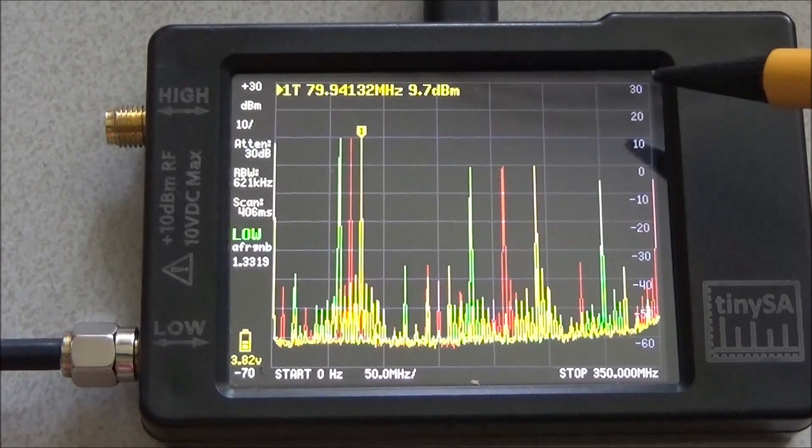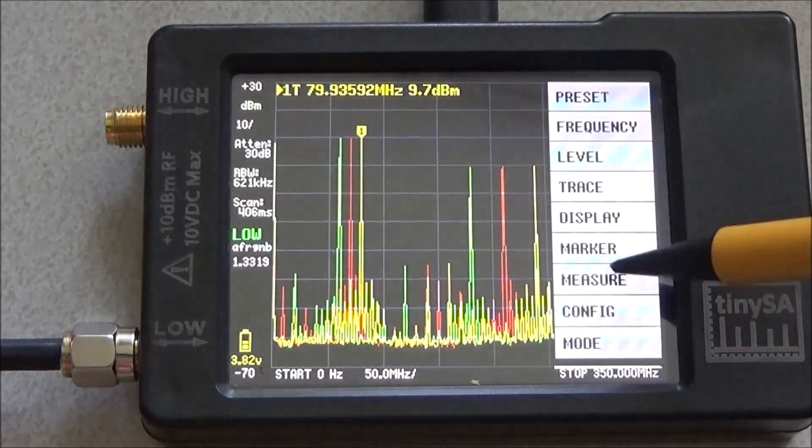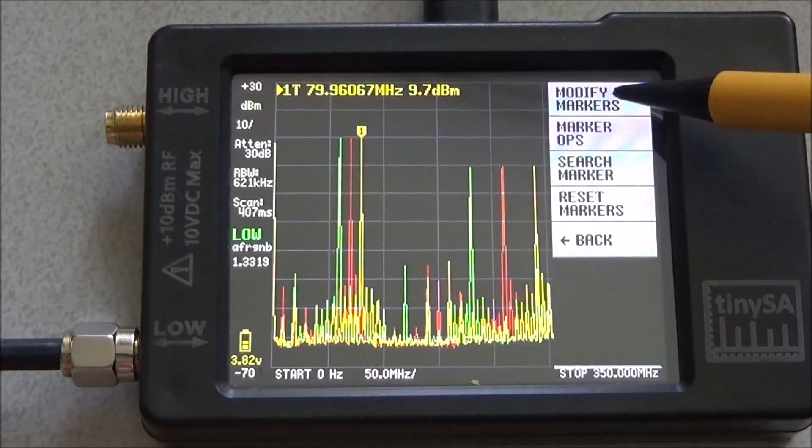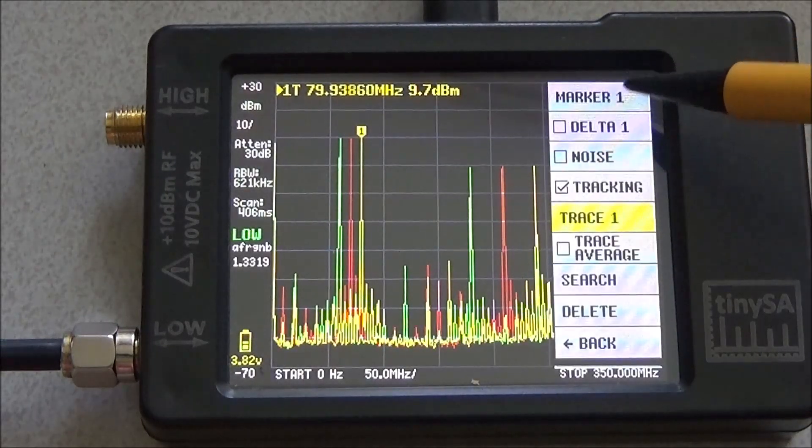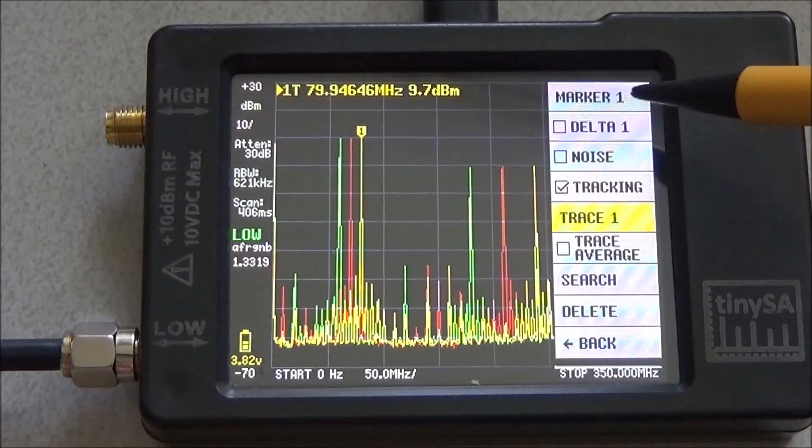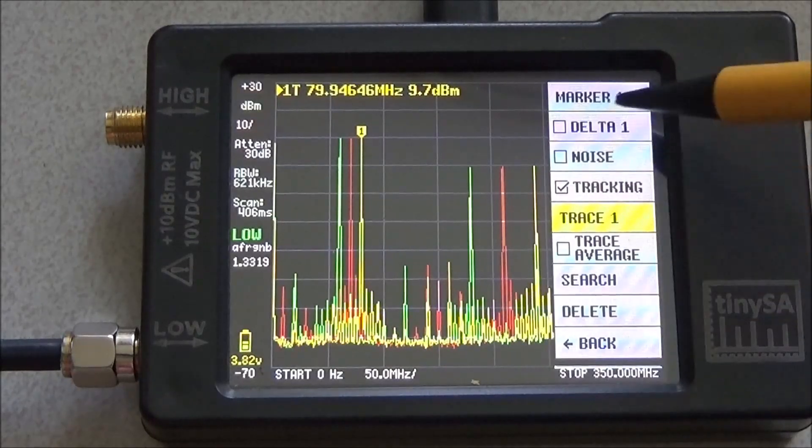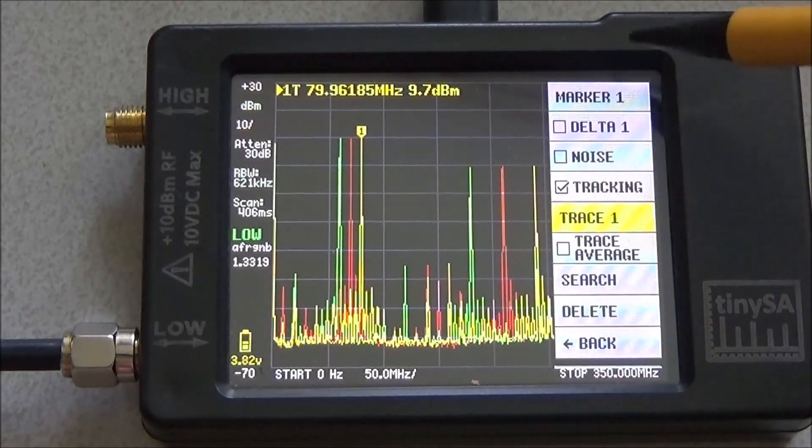In this release also the marker menu has seen a small change. We go to the marker menu and we go to modify markers. In the previous version you had to select which marker to operate on. But here the marker that you operate on is shown here at the top, marker 1, and everything you do is then relative to marker 1.